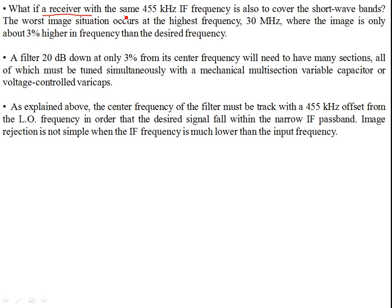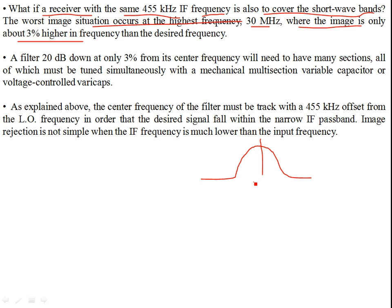What if the receiver with the same 455 kilohertz IF is also to cover the shortwave band? If you are going to demodulate high-frequency shortwave band signals, there's a problem. The worst image situation occurs when the highest frequency — say 30 megahertz — has an image only 3% higher. At a very high frequency like 30 megahertz, a typical shortwave radio broadcast frequency, 3% above is very close. You're not going to provide much attenuation because the level is too close.